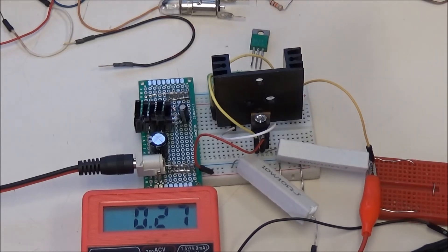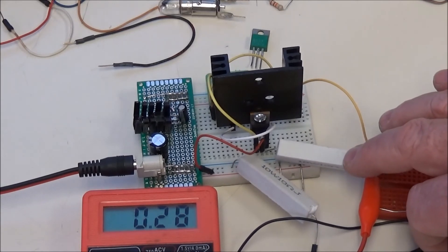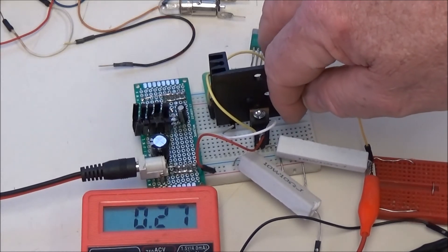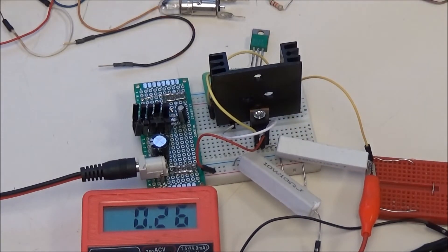Right now, it's putting out pretty steady 270 milliamps into a 10 ohm load. Seems to work pretty well. So, we'll look at the schematic, and I'll explain how this operates.